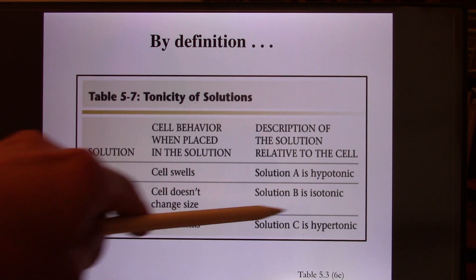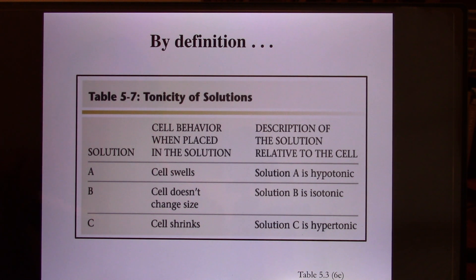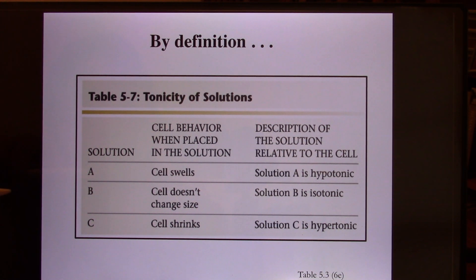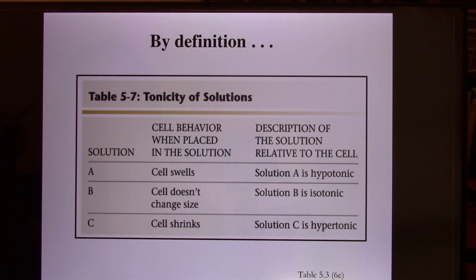Before the break, we talked about tonicity. We have three different kinds of tonicity. They can affect the cells depending on how the cells respond. If the cells do not change shape, that's called isotonic. When the cells shrink, that's hypertonic. And if the cells swell, that's hypertonic.